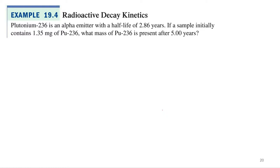So let's talk about plutonium. Plutonium-236. Plutonium-236 is an alpha emitter with a half-life of 2.86 years. If a sample initially has 1.35 milligrams, what's the mass after five years? So we've got 1.35 milligrams, half-life of 2.86 years, five years.